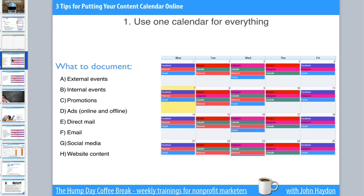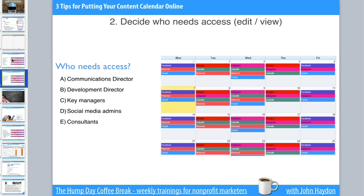Internal events — these would be volunteer recognition events, galas, walkathons, fundraisers, and so forth. Any sort of promotion that you're doing. Ads, both online and offline. Direct mail — when are people receiving the direct mail piece? They might receive email as well, and there's probably a huge overlap.